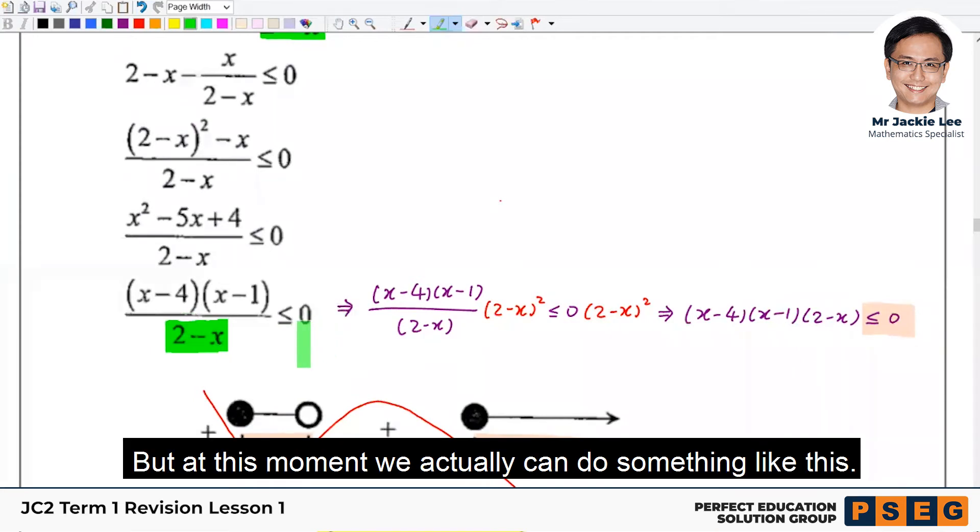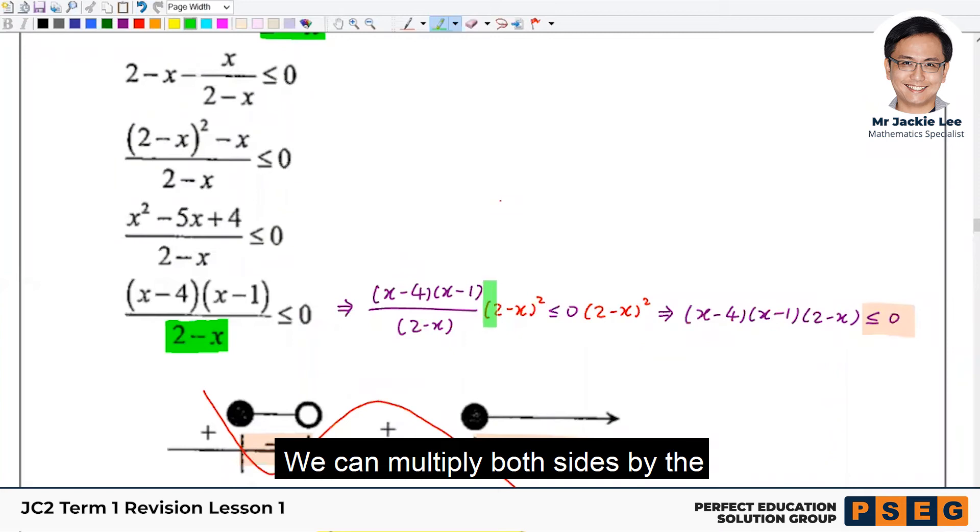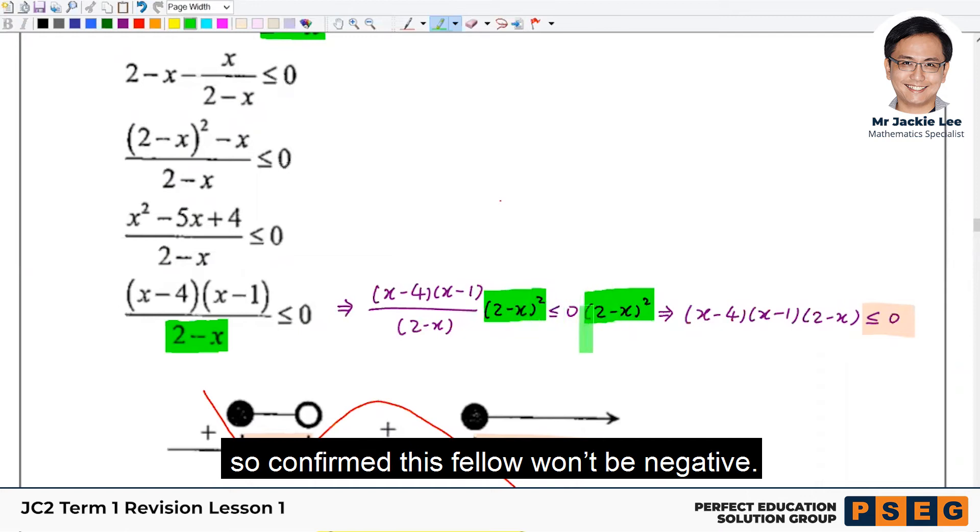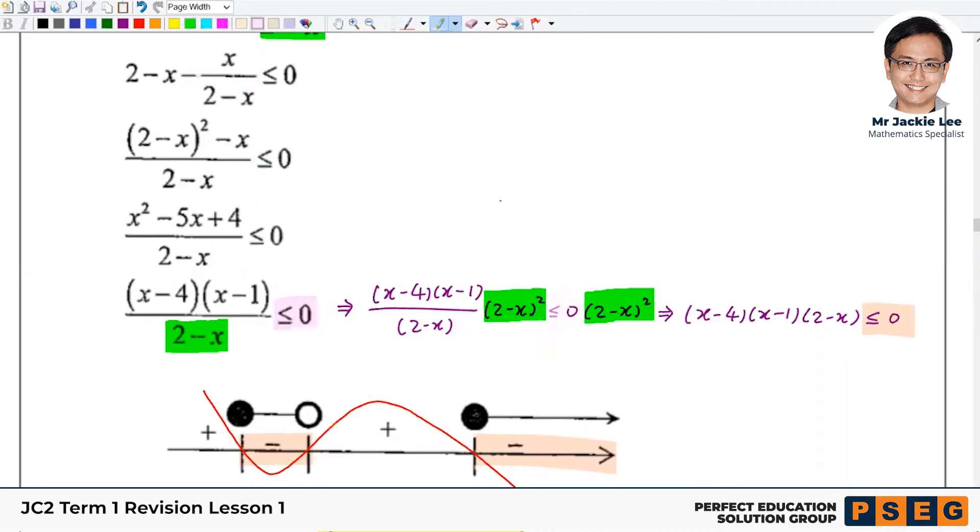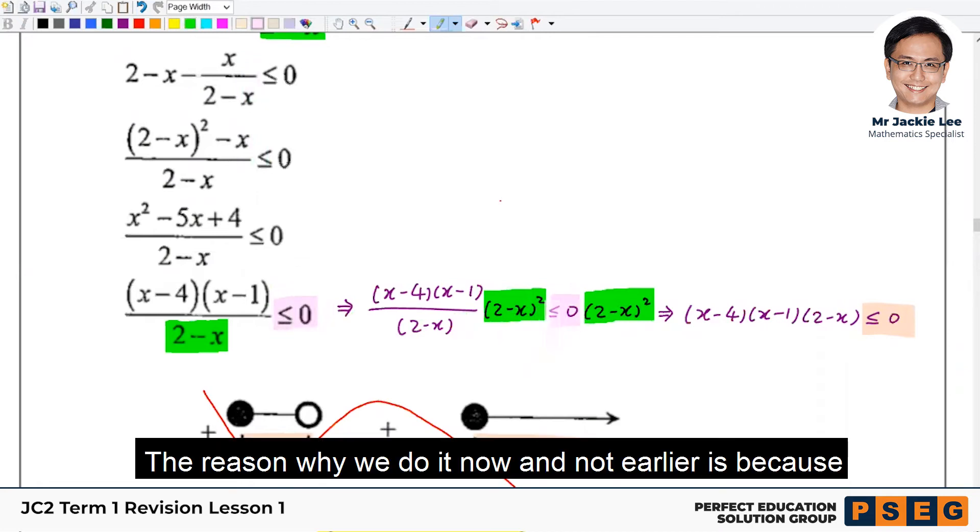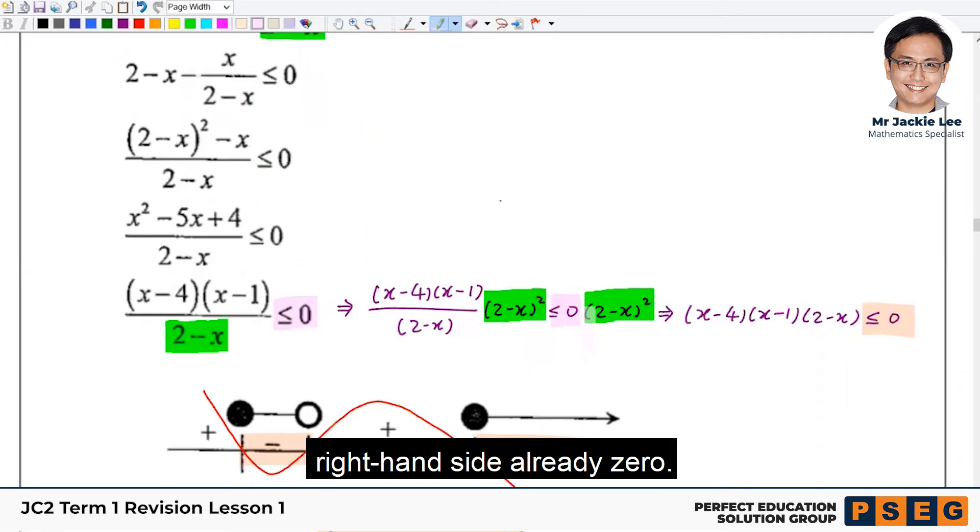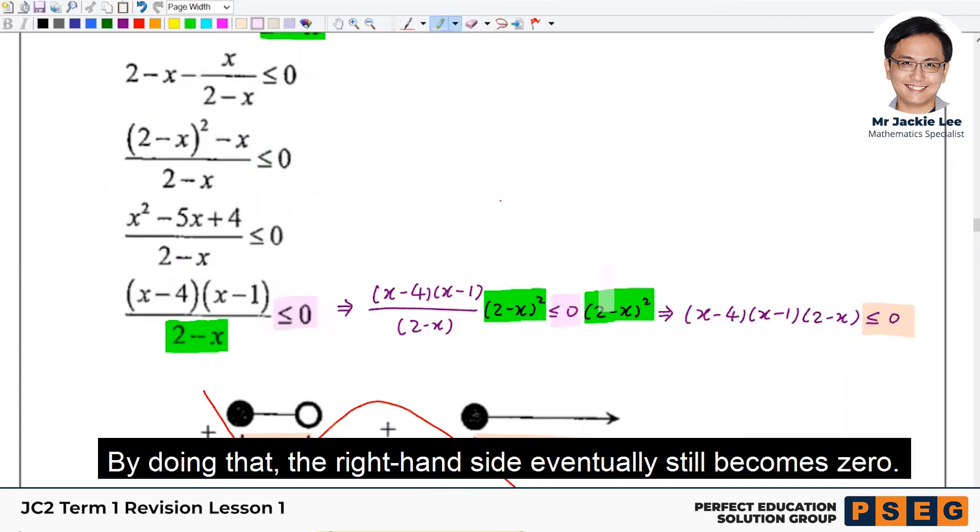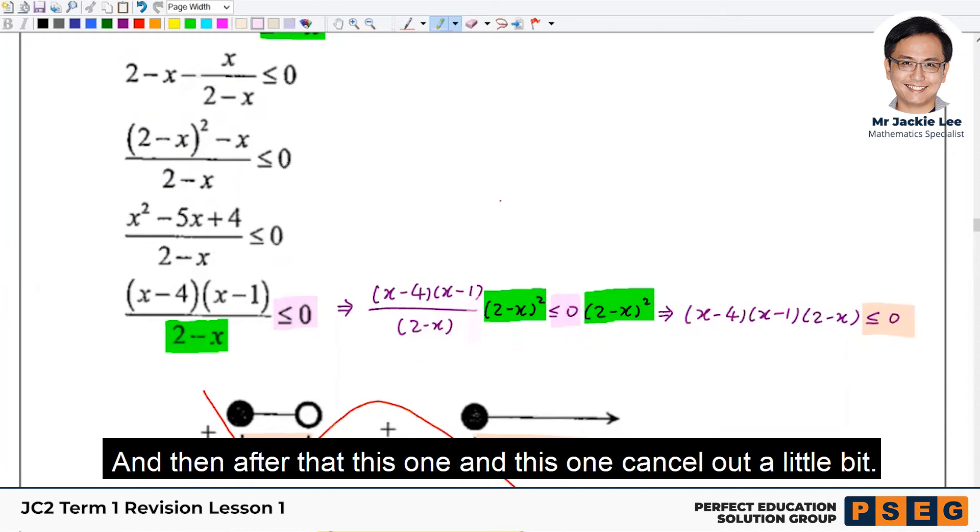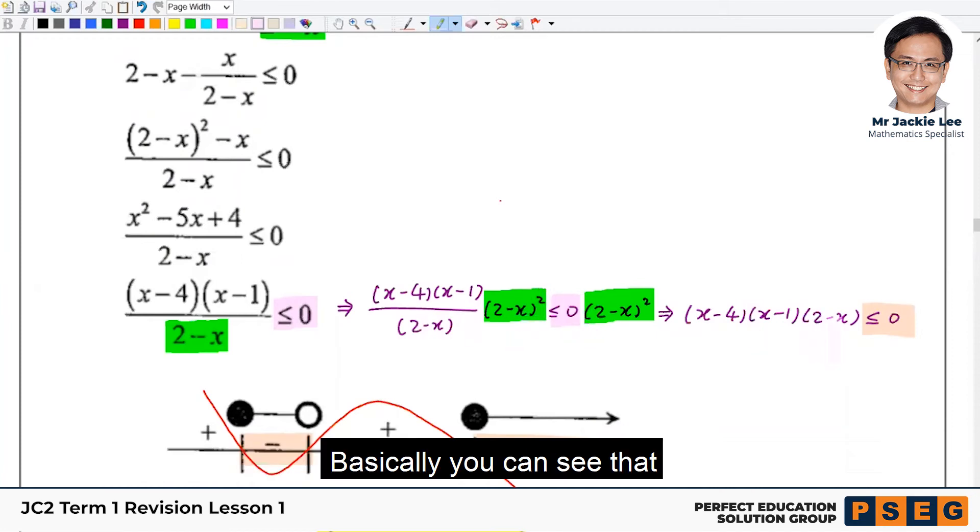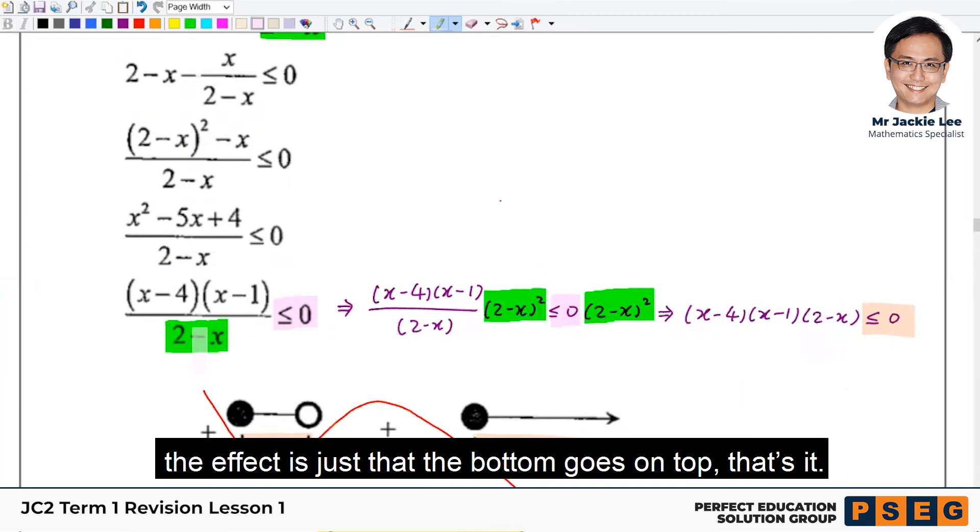But at this moment, we actually can do something like this. We can multiply both sides by the 2-x plus with the square, bracket square. Because we have square, so therefore confirm this value won't be negative. Therefore the sign, no need to change. The reason why we do it now but not earlier is because right-hand side already zero. After you shift right-hand side already zero. So by doing that, actually the right-hand side eventually still becomes zero. And then after that, this one and this one cancel a little bit. Basically you can see that the effect is just the bottom goes on top. That's it.